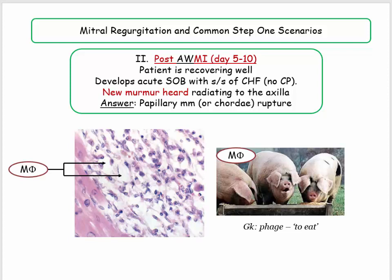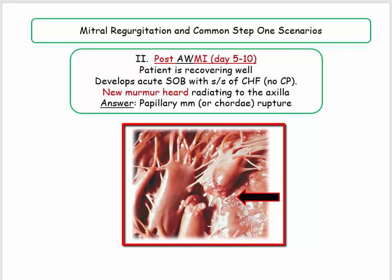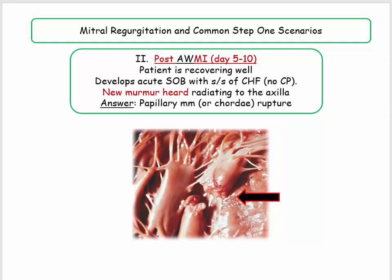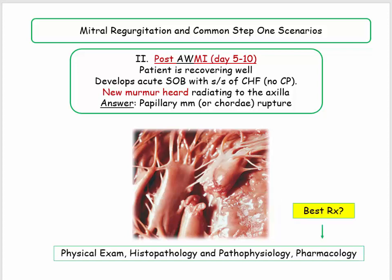Why days 5 to 10? This is the macrophage phase of recovery. The macrophage — from the Greek 'to eat' — has a prodigious appetite, consuming dead myocytes indiscriminately. Fibrous tissue is yet to be formed, so the myocardium develops large holes and ruptures, triggering acute onset of mitral regurgitation. This is the same scenario for LV rupture discussed in the cardiac tamponade video. From the NBME point of view, this integrates physical exam features with histopathology and pathophysiology across disciplines, and if they ask about best treatment, they integrate pharmacology as well.